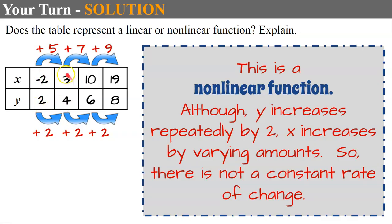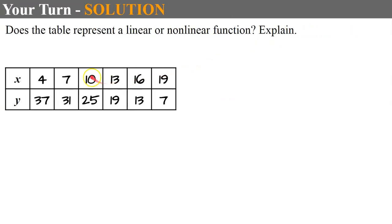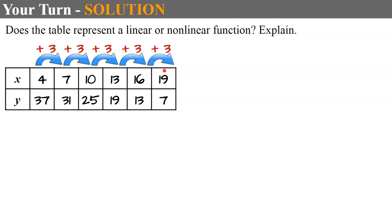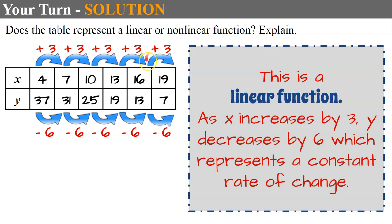Here's another table. Linear or nonlinear? x increases by 3 each time: 4, 7, 10, 13... constant. y decreases by 6 each time: 37, 31, 25, 19, 13, 7... also constant. So this is a linear function — as x increases by 3, y decreases by 6, representing a constant rate of change. The slope would be −6 ÷ 3 = −2, so the line decreases from left to right.